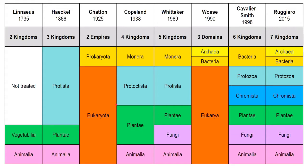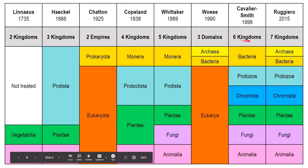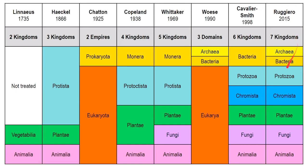I hope you still remember this table that I presented in the video on classification of life. This shows us the changes of the different classification systems over time, in which we started with two kingdoms during the time of Linnaeus in 1735, and it underwent several revisions. As of now, what we will follow for the purpose of this discussion would be the Seven Kingdoms system by Ruggerio in 2015.